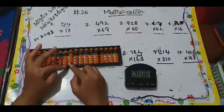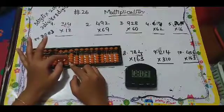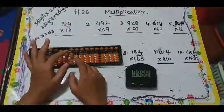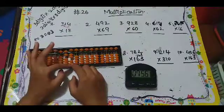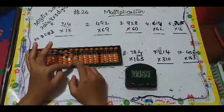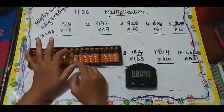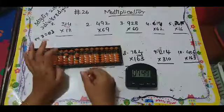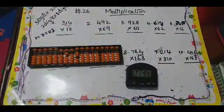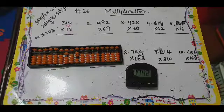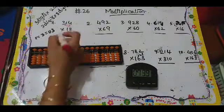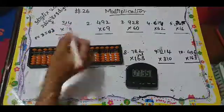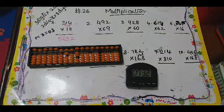To put eight: plus ten minus two. Next, eight fours are 32, so plus five minus two. Thirty-two done. So the answer is 5,652.